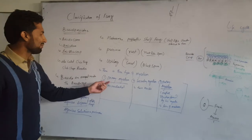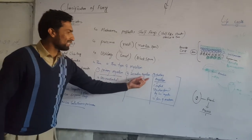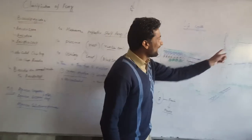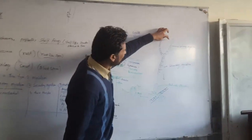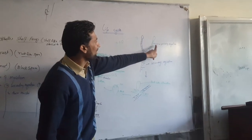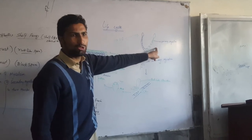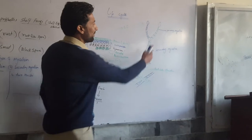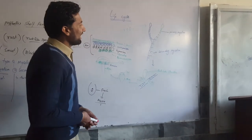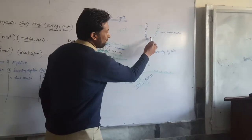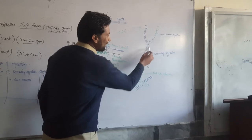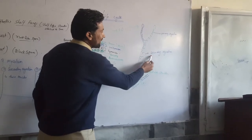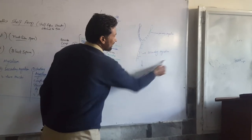Now we are coming to the mycelium of this fungi. There are three types of mycelium: primary mycelium, secondary mycelium, and tertiary mycelium. The primary mycelium is formed when the spore germinates and forms a mycelial structure that is uninucleated. When the primary mycelium fuses with each other, it forms a secondary mycelium that is binucleated.